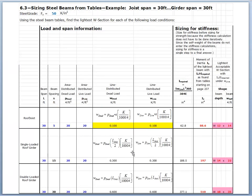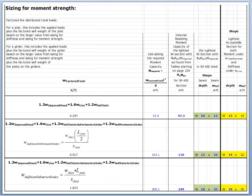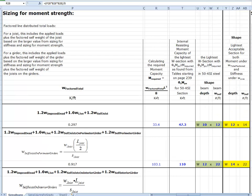In the previous steps we did our load calculations, sized for stiffness, and came up with a W12×14 based on stiffness requirements. Now we're going into sizing for moment strength. We have the sizing procedure for joists, single-loaded girders, and double-loaded girders, and we're starting on the roof and working downward toward the floor. We could size the floor before the roof, since roof load doesn't go on the floor but on the columns, but we're proceeding in an orderly top-down manner.